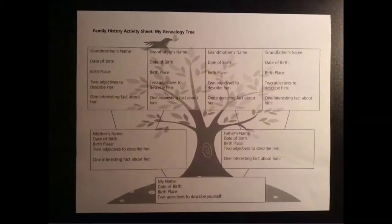A simplified version of the pedigree chart can be found in your genealogy packet. This family history activity sheet will help you get started. You begin with your name at the bottom, where the roots are. You include your name, the date of birth, and your place of birth.